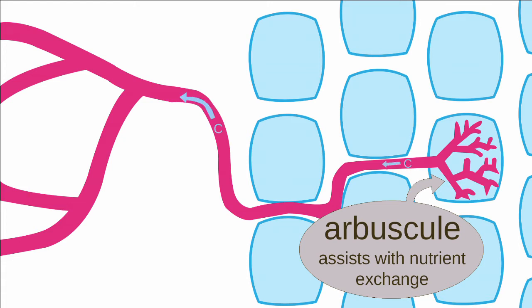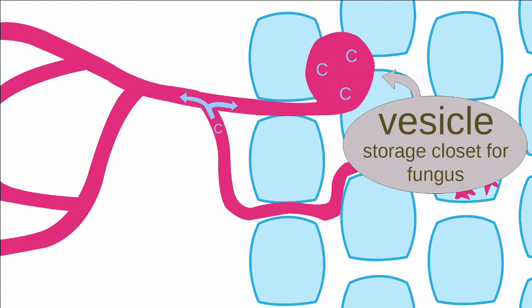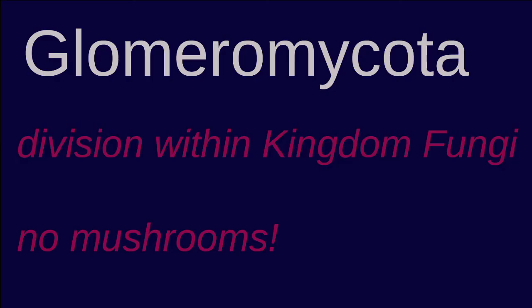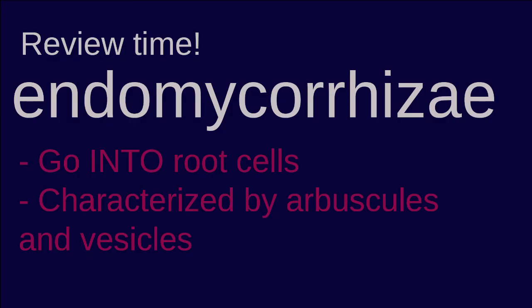The plant gives the fungus carbon for energy, while the fungus gives the plant nutrients from the soil, like fixed phosphorus. It can also help protect the plant from disease. Endomycorrhizae also forms vesicles in the plant roots, which are bladder-like structures that store extra carbon for the fungus. Endomycorrhizal fungi can only be found in glomeromycota, which do not form large fruiting bodies like mushrooms. Around 80% of plant species have an endomycorrhizal association, and often there are specific associations between plant species and fungal species.